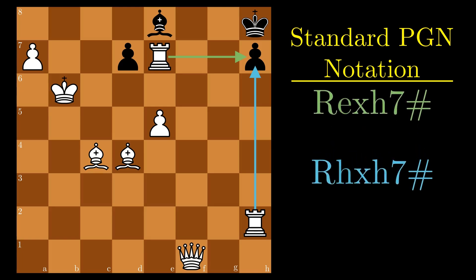To disambiguate the options, the file of the rook moved is added. In other words, the PGN would record rook e captures h7 or rook h captures h7, depending on which one was used.